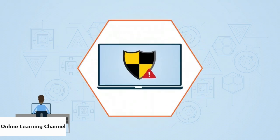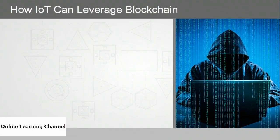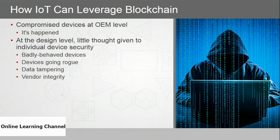How can IoT leverage blockchain to secure devices and bolster trust? Better security is clearly needed. We've heard accounts of compromised devices at the OEM level — devices shipping from the plant already infected with malware like keyloggers. There are few to no standards or regulations that enforce security. At the design level, little thought is given to an individual device's security — an industrial designer puts a tablet on a fridge door, software developers create the interface, but what's their motivation to implement more than the most basic security measures?